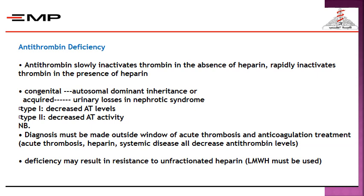Antithrombin 3 slowly inactivates thrombin in the absence of heparin, and rapidly inactivates thrombin in the presence of heparin. Congenital deficiency follows autosomal dominant inheritance. Acquired deficiency results from urinary loss, as in nephrotic syndrome. There are two types: type 1 — decreased antithrombin level, and type 2 — decreased activity.